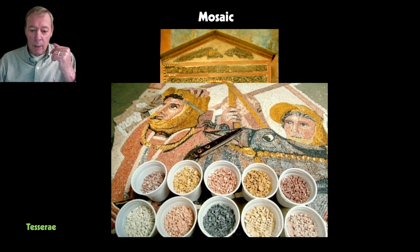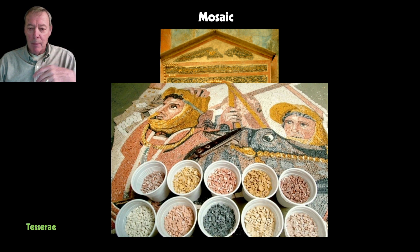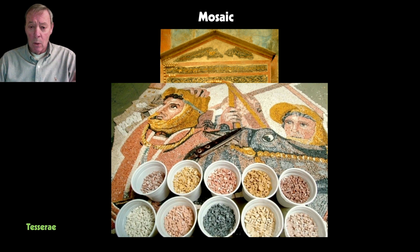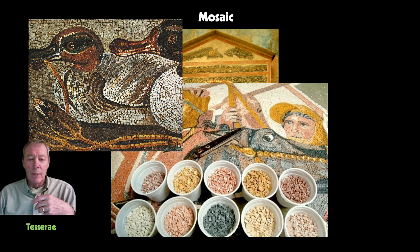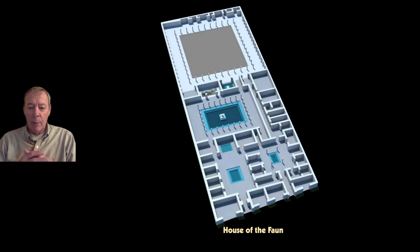This is a close-up view of a mosaic under restoration, showing cups filled with tesserae—small colored tiles. Using this type of medium allows a much broader range of colors than when restricted to colored pebbles. Here's another closer view where you can clearly see tesserae being used to generate a rather realistic image of a couple of ducks. The Romans became quite accomplished with their mosaic work.